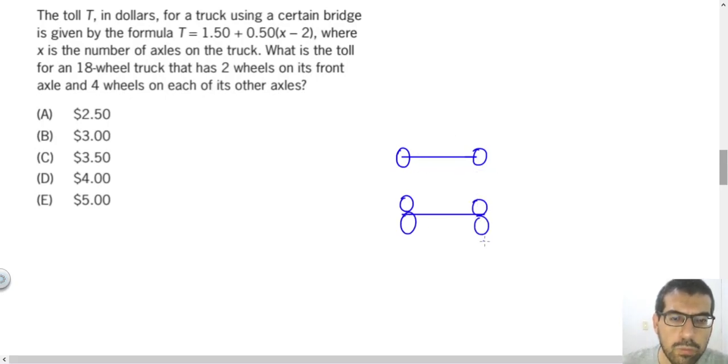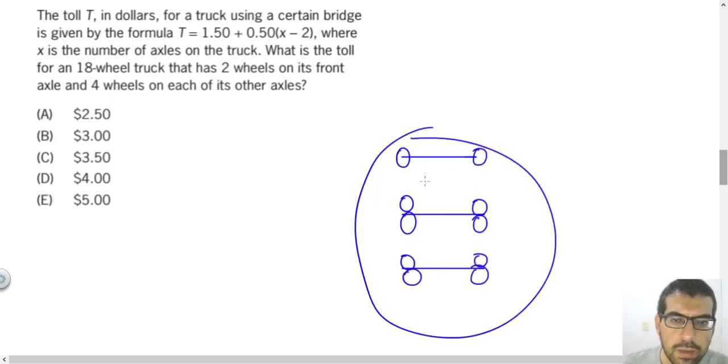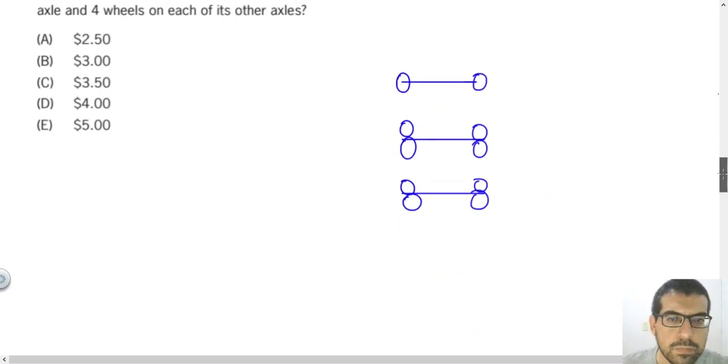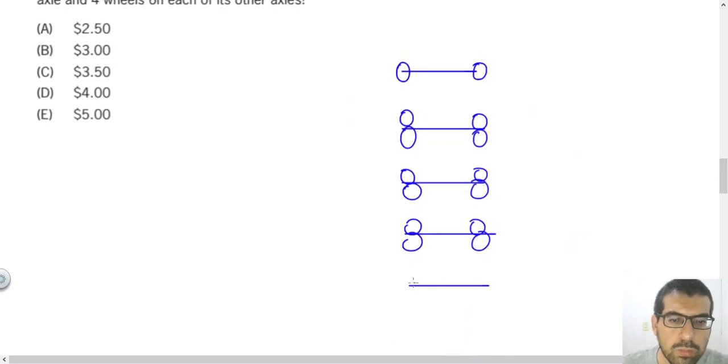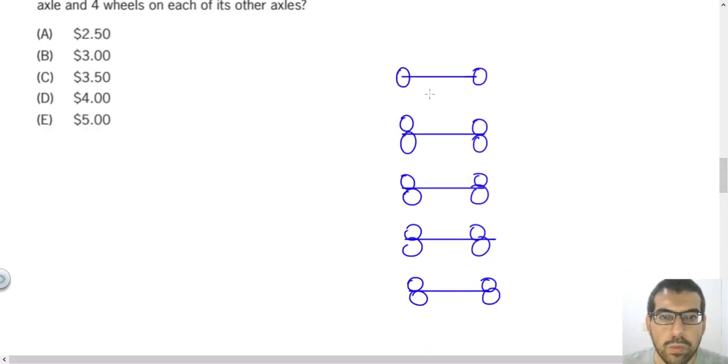For example, I have four wheels in the next axle. So here I have six wheels, as you can see. One more. Now we have 10. And remember, we need to have 18. So let's continue. One more. The total now will be 14. And if we include one more, we get 18 wheels. So we have 18 wheels, two wheels in the front, and four wheels by axle in the other axles from the truck.